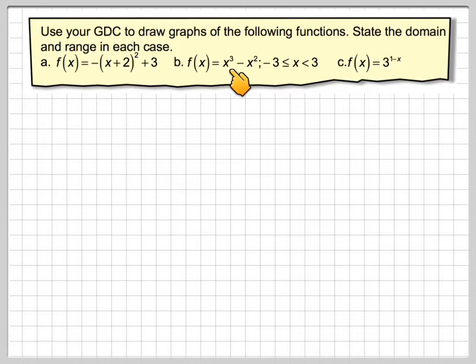b, f(x) is x³ - x², for x being between -3 and 3. And c, f(x) is equal to 3 to the power of 1 - x.